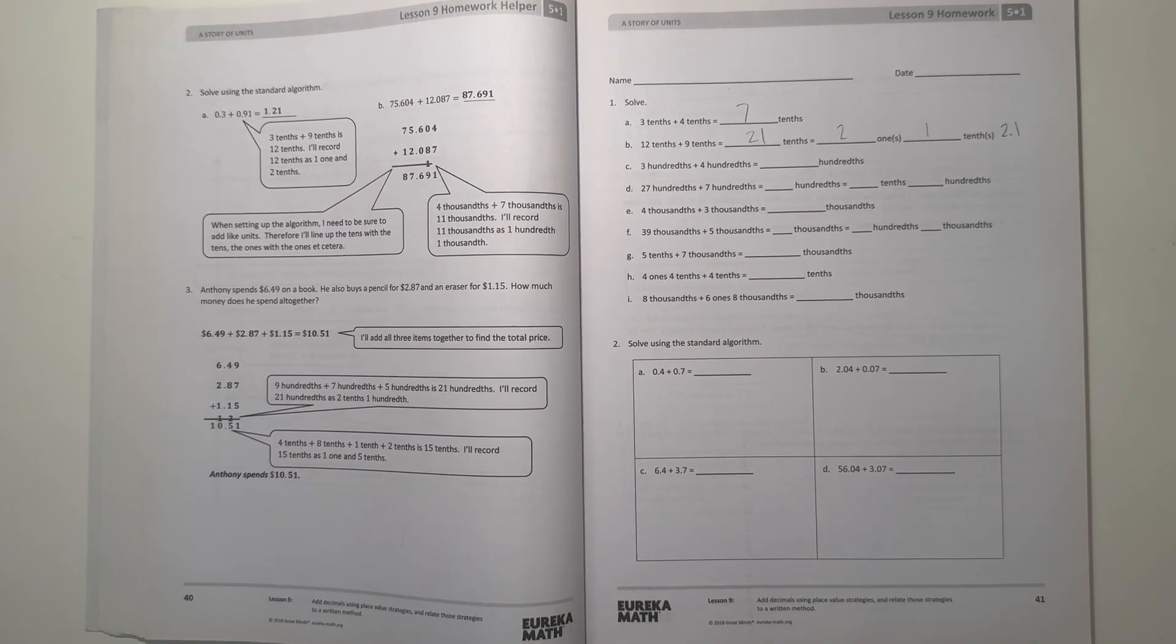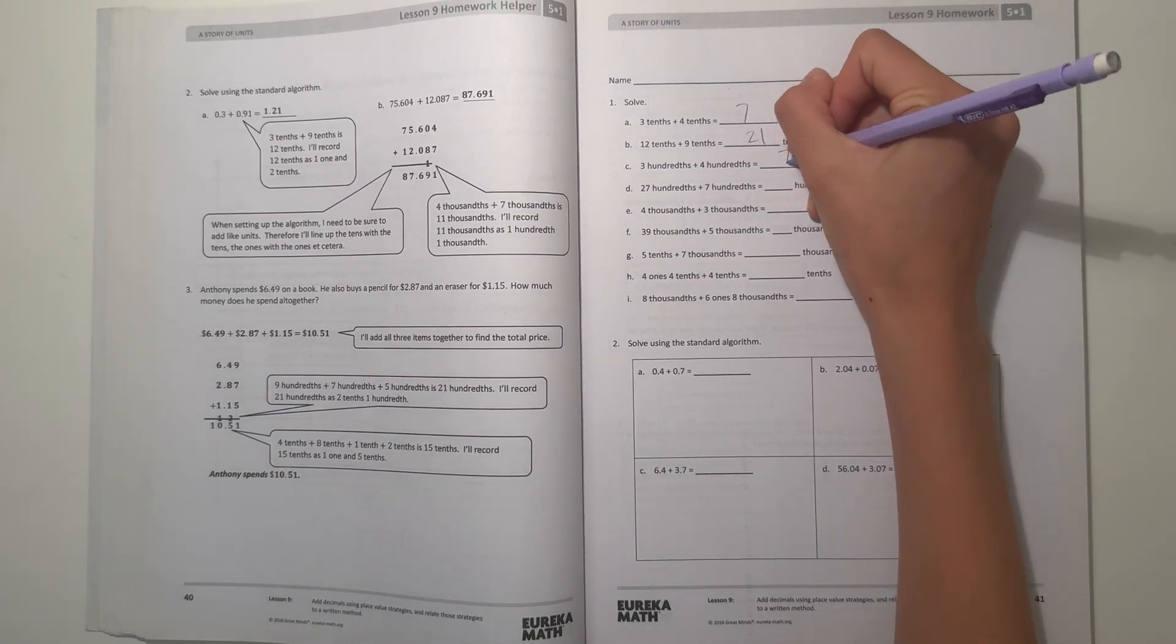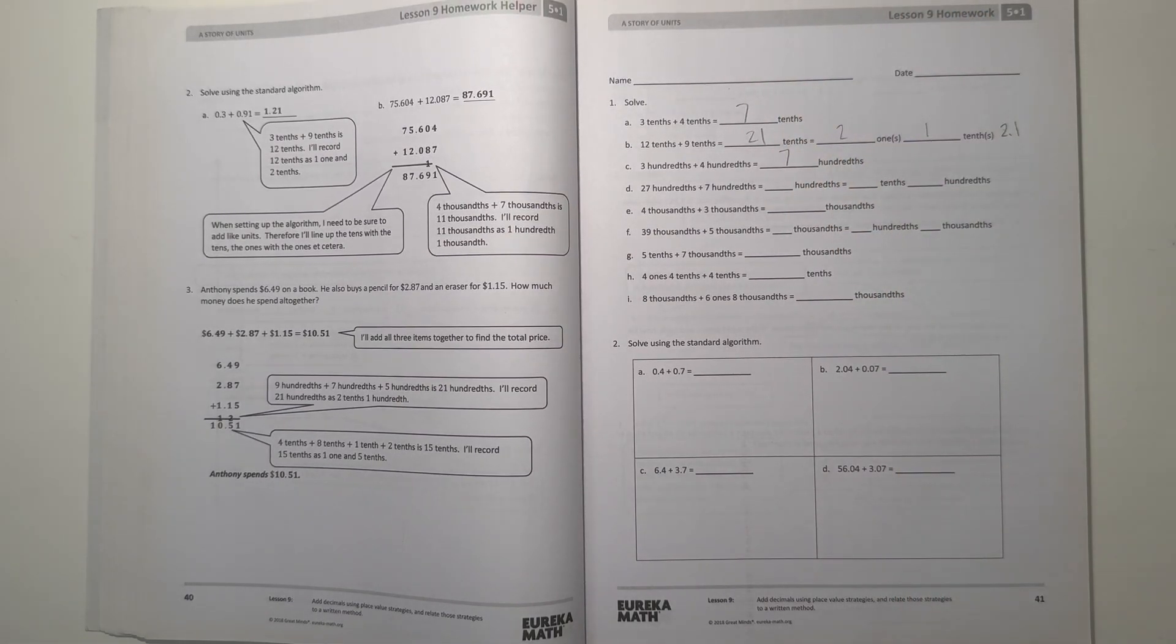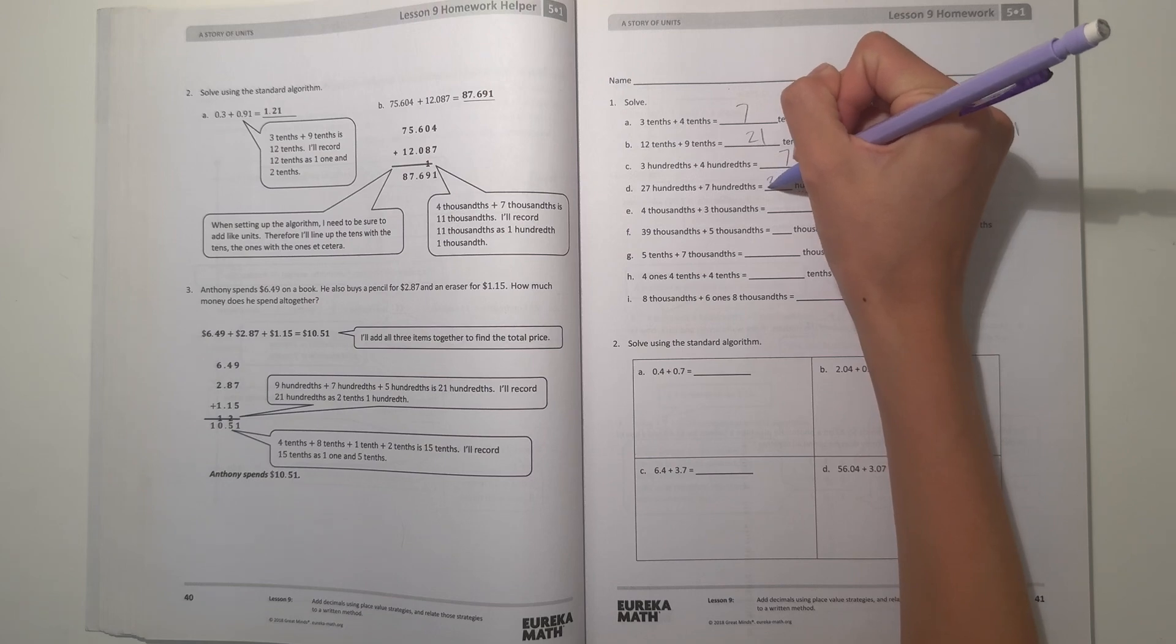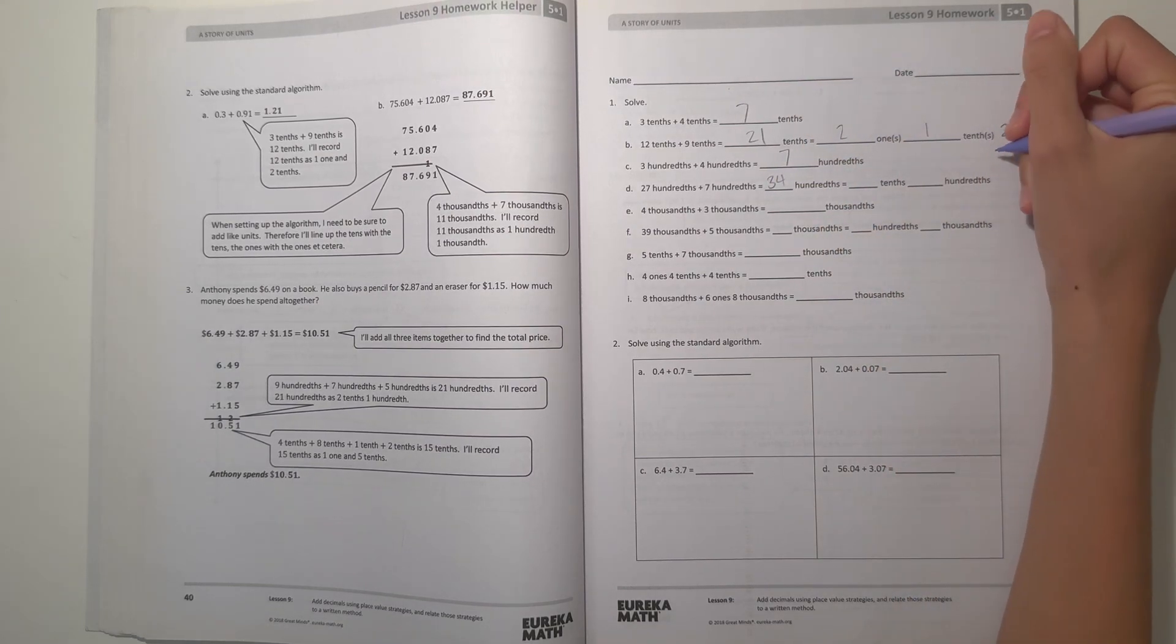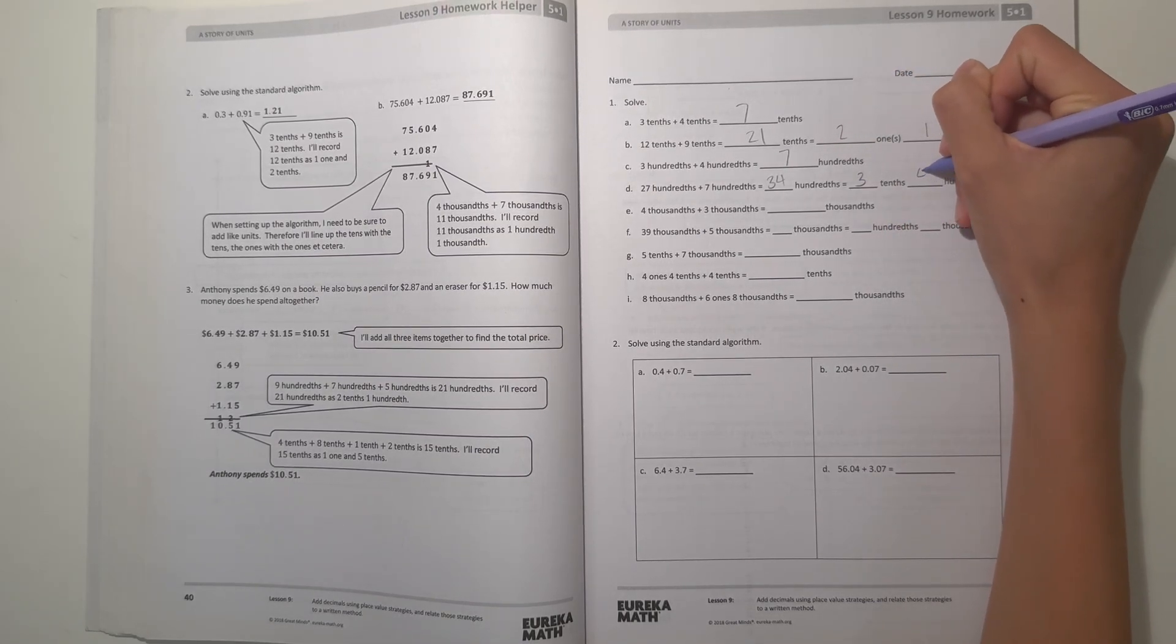Alright, C: 3 hundredths plus 4 hundredths is 7 hundredths. But now 27 hundredths plus 7 hundredths. 27 plus 7 is 34, so our answer is 34 hundredths. And this number is written as 0.34. So this number has 3 tenths and 4 hundredths.